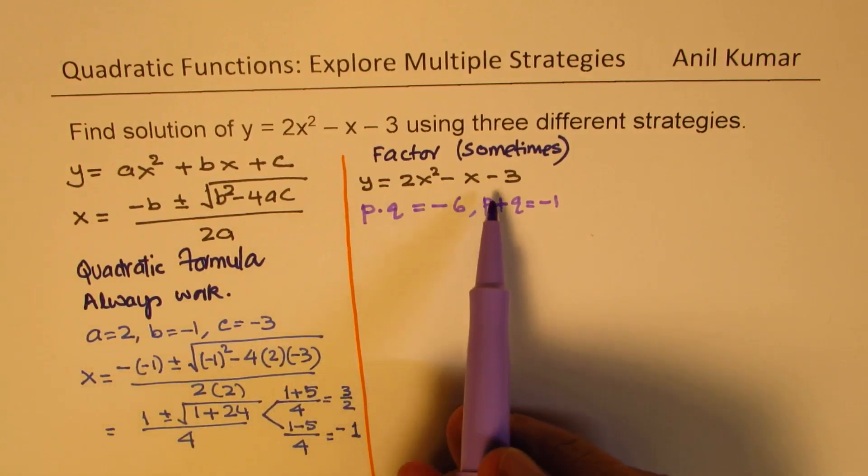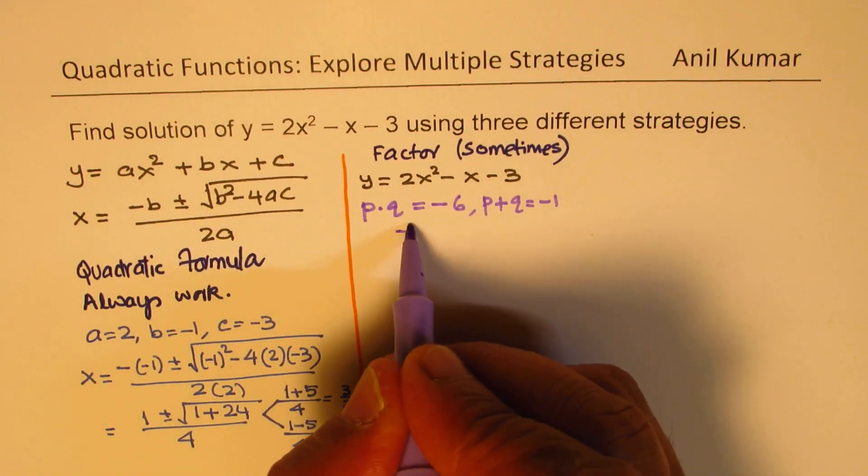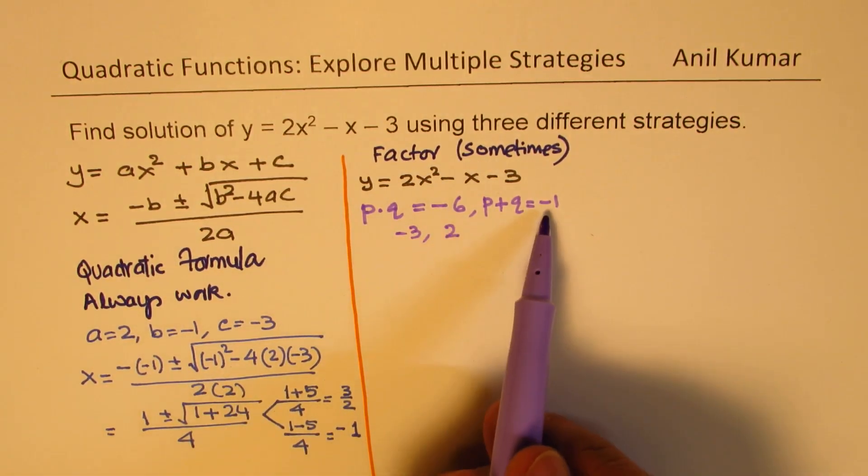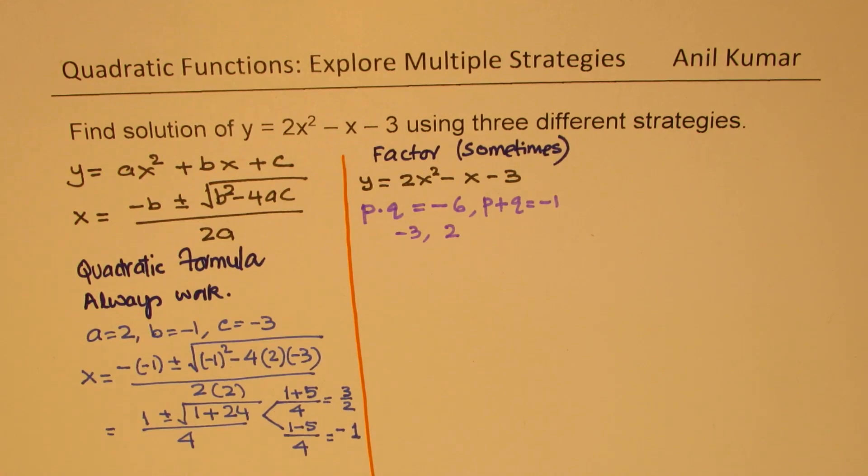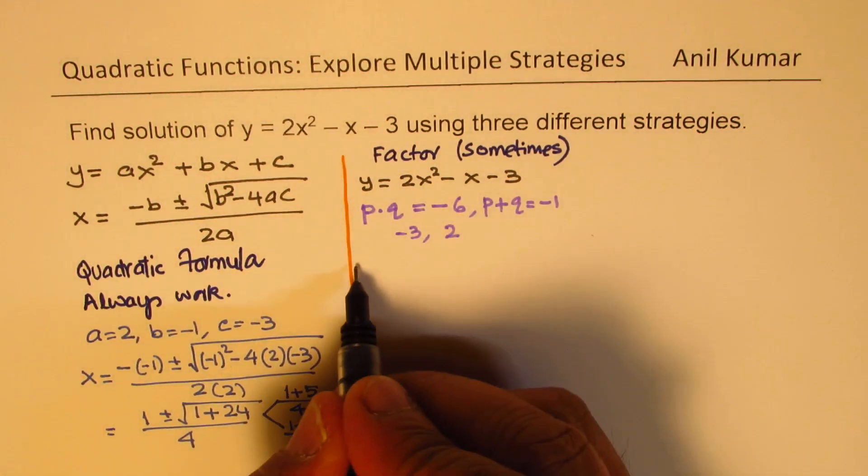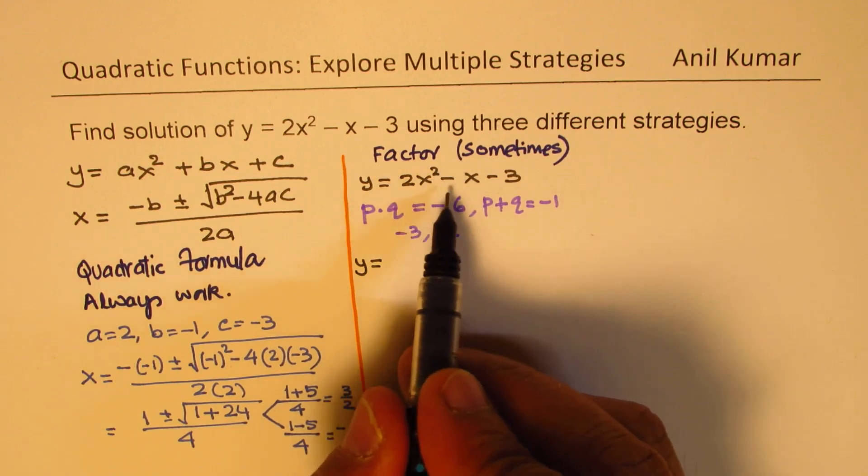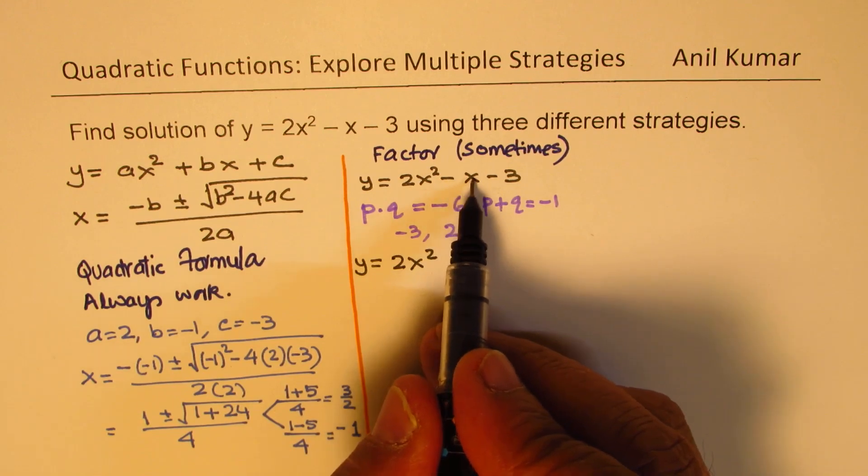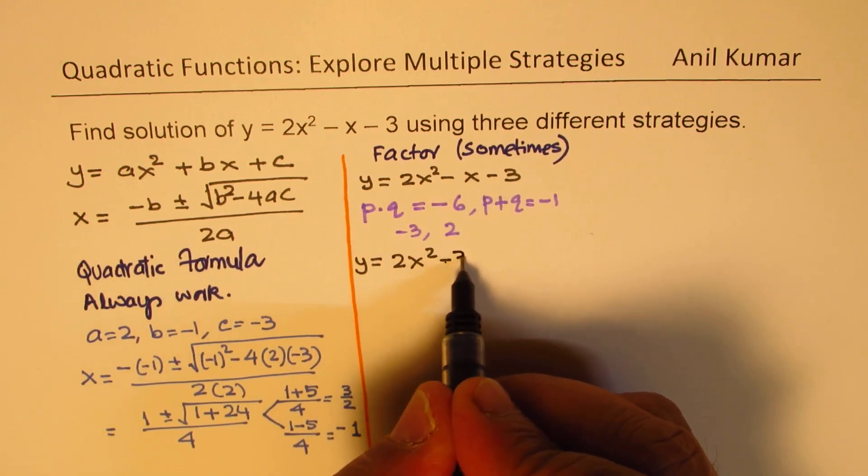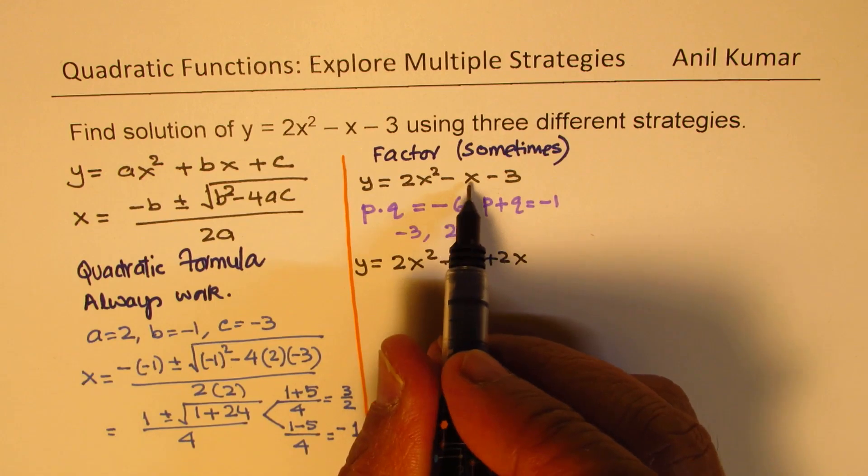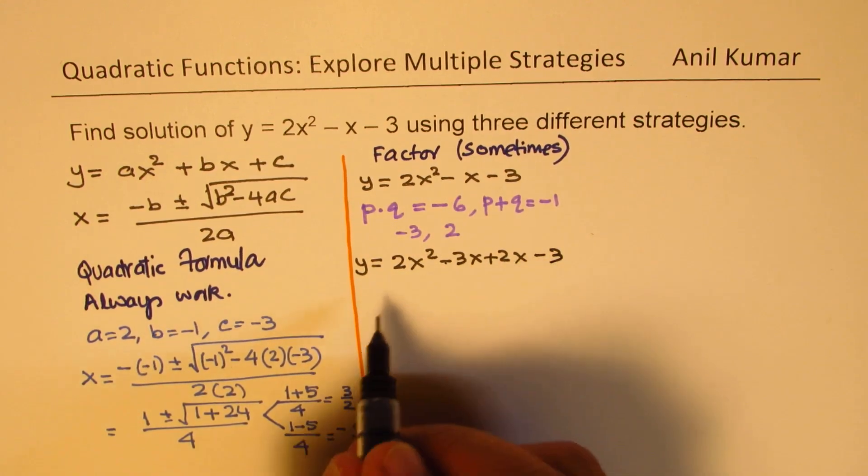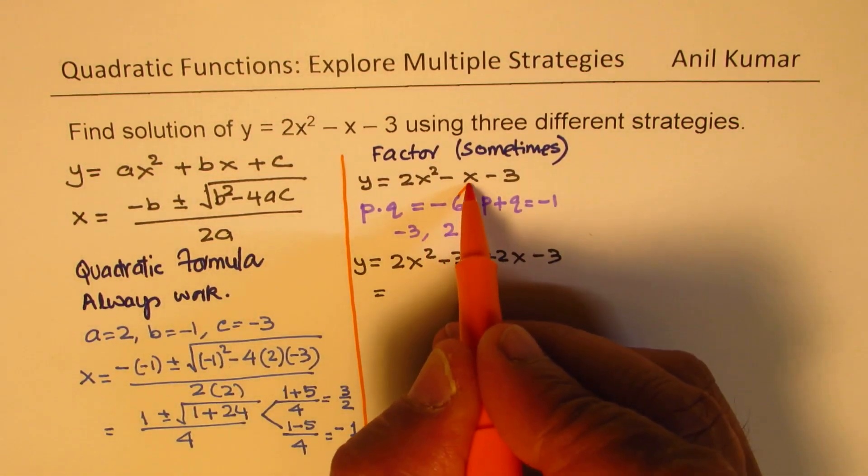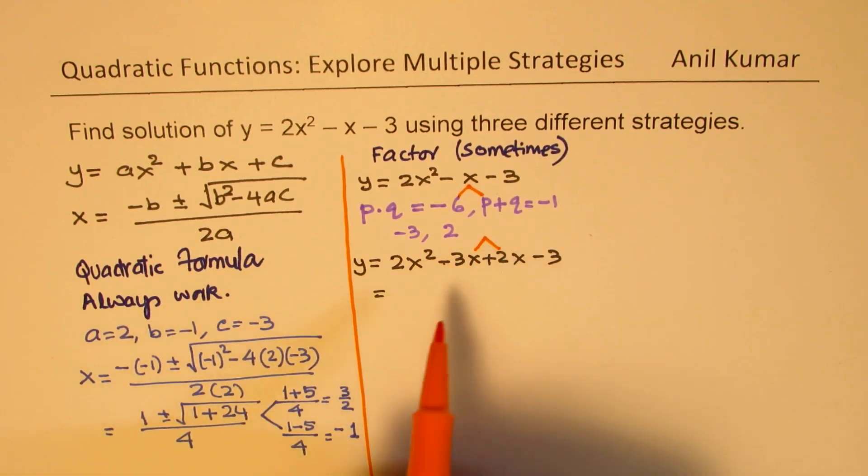The two numbers that can work will be minus 3 and 2. So when you multiply, you get minus 6. When you add, you get minus 1. So the method to solve is we can write our equation y equals 2x squared minus x minus 3 as 2x squared split minus x into minus 3x plus 2x. Now that is minus x. And now you can group factor. So in the first step, I wrote minus x in these two forms. Do you see that? And now we are doing group factor.